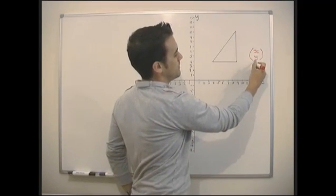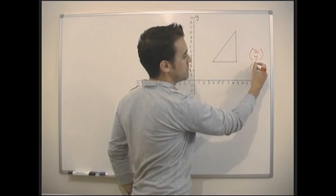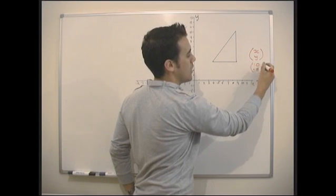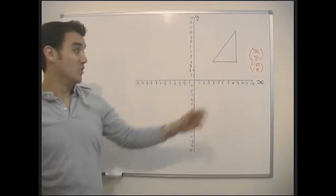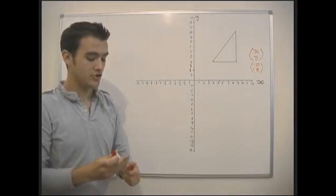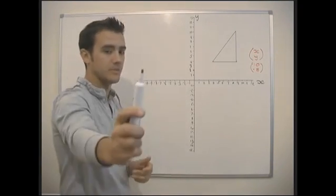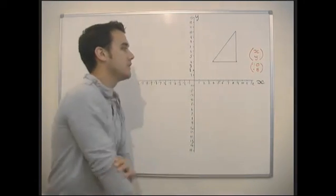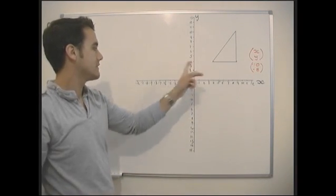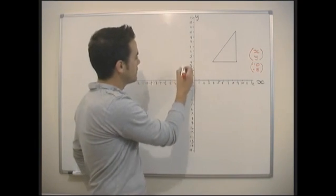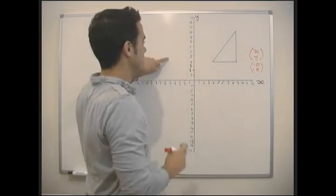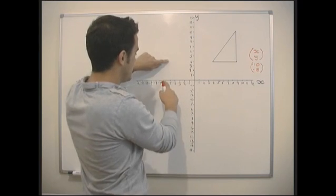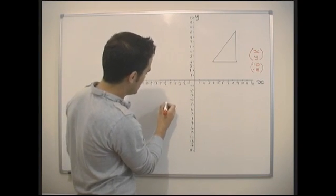This is called a translation. We're going to move it by -10 in x and -8 in y. There are three points on a triangle, so you just translate each point. This point is at (4, 4), so we move it minus ten in x: four minus ten gives us minus six. And minus eight in y: four minus eight gives us minus four. So that point will now be at (-6, -4).